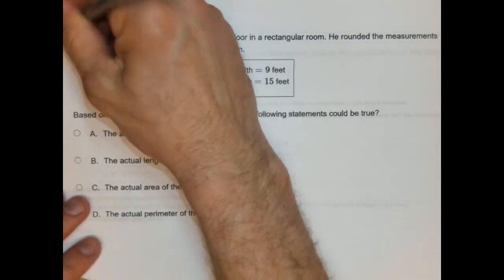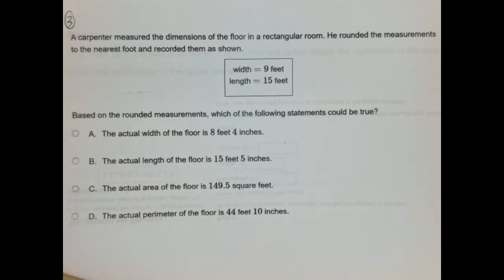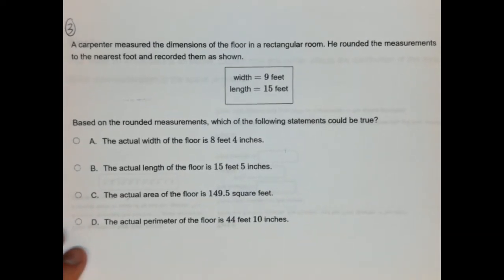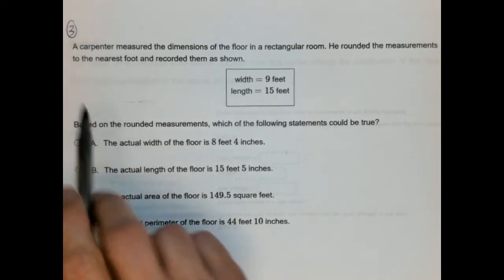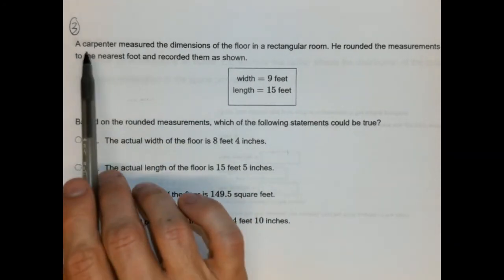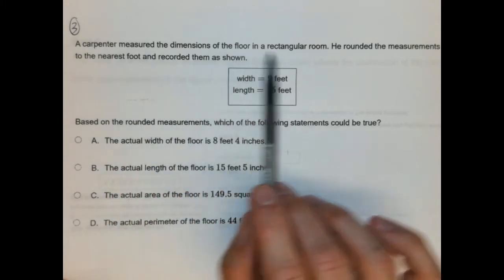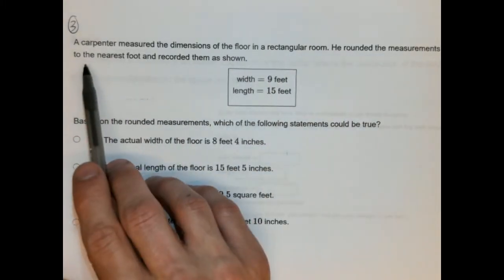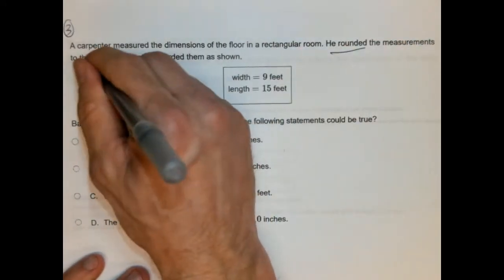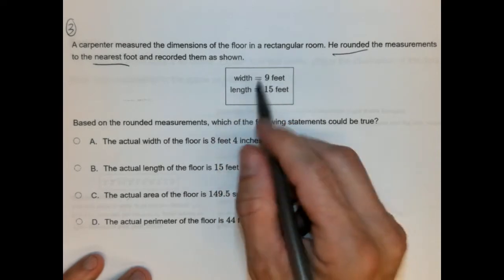All right. So, number three. This is another one that I think this is actually one of the most deceptive MCAS problems since the MCAS became a thing in the early 2000s. And you'll see why. When I first saw this problem a few years ago, I was like, wow. Just, whoever made this problem was mean. So, here we go. It's not hard once you, if you pay close attention, but it's so easy to make a mistake on this. A carpenter measured the dimensions of the floor in a rectangular room. He rounded the measurements to the nearest foot and recorded them below. So, again, he rounded and he did to the nearest foot. So, these are not the exact measurements. These are estimations.